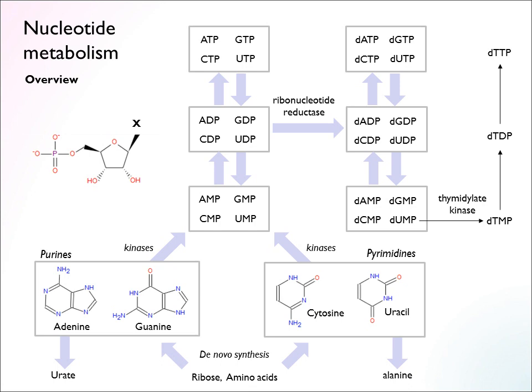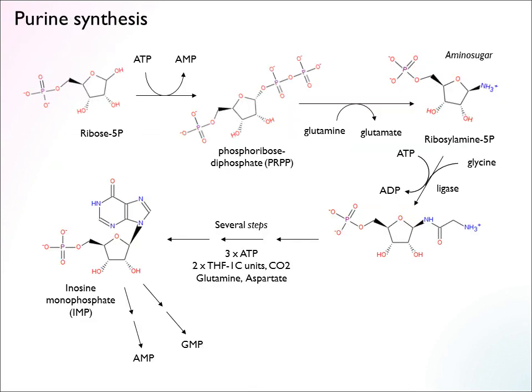Let's look a bit at the synthesis pathways, starting with purine synthesis. This is a pretty long and complex pathway, and there's no point going through all of it — you can easily look these things up in the databases if you're interested in particular steps. Purine synthesis starts out with a ribose phosphate, so this pathway is phosphorylated throughout — there's always a phosphate group hanging on to these purines.